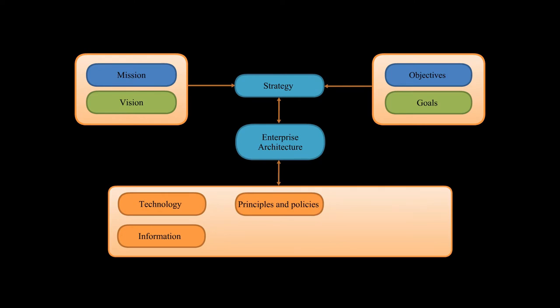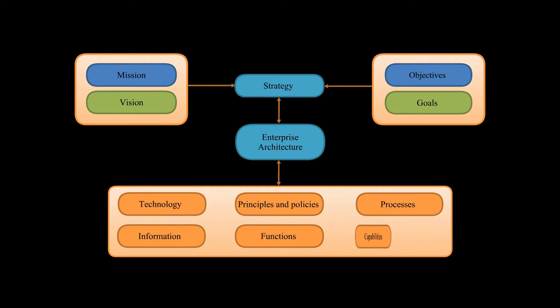Principles are general rules and directives intended to be enduring and seldom change, which inform and support the way in which your organization undertakes to fulfill its mission. Policies are the set of resource allocation choices that define the scope of your organization's activity in order to achieve your objectives. A function is a process or an operation that is carried out regularly to lead part of the mission of your organization. A process is the organization of a set of activities contributing to the objectives of your organization. Capabilities are the capacities that an organization, a person, or a system possesses.